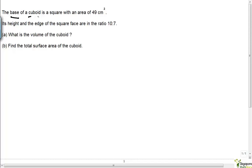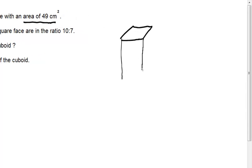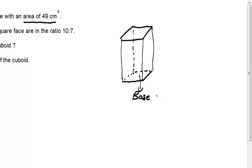The base of a cuboid is a square with an area of 49 square centimeters. Let me draw this cuboid. So this is a cuboid, and this here is the base of the cuboid. This base is a square with an area of 49 square centimeters, so if this were the top view, it will look like this.